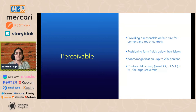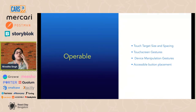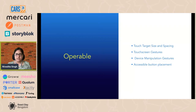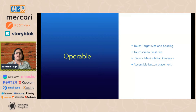The second principle: your content should be operable — not just by users using the touchscreen, but also by users using external keyboards. Touch targets should be at least 9x9mm, with inactive space around them so they aren't clicked by mistake. Touch screen gestures should indicate what happens when you use them, and even fancy device manipulation gestures should have alternatives for keyboard users. Buttons should be placed in an accessible manner so they can be used however the device is held.